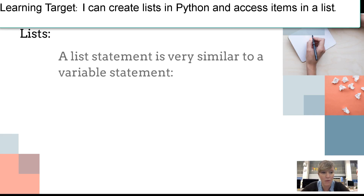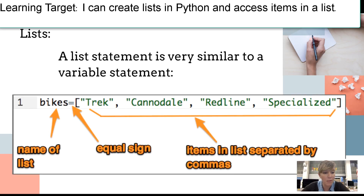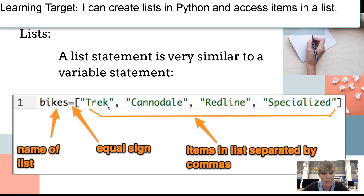A list statement is very similar to a variable statement in that it has the list name on the left-hand side and an equal sign to start assigning values to that list. Remember, an equal sign in Python is not a statement of equality like it is in mathematics — it is simply a way to assign values to something, whether it's a variable or a list. This list contains string values, all separated individually by double quotes, and each item is separated by a comma.